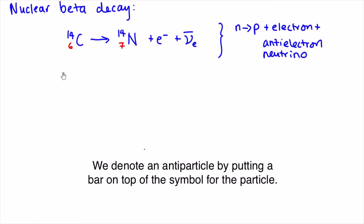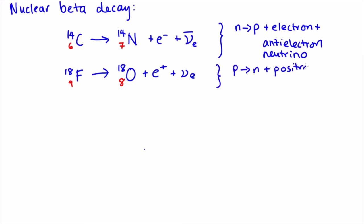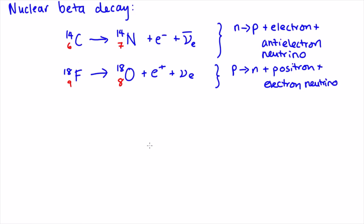Or the other alternative: fluorine-18 becomes oxygen-18, so it changes a proton into a neutron and also produces a positron and an electron neutrino in the process. The electron anti-neutrino and the electron are both reaction products in the first beta-decay process, while the electron neutrino and the positron are reaction products in the second beta-decay process.